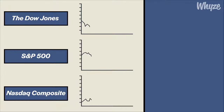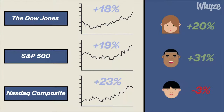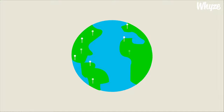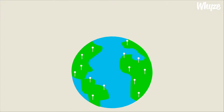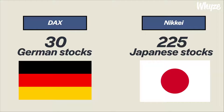Stock market indices are mainly used as indicators of how a specific country's stock market and economy are performing. They are also used as benchmarks for investors to compare the performance of the stocks they own. For example, an investor with a strong stock portfolio will match or outperform the performance of the index it's being compared to. There are hundreds of stock market indices around the world, such as the DAX, which measures the performance of 30 major German companies on the Frankfurt Stock Exchange, and the Nikkei, which measures the performance of the 225 most important companies in Japan.